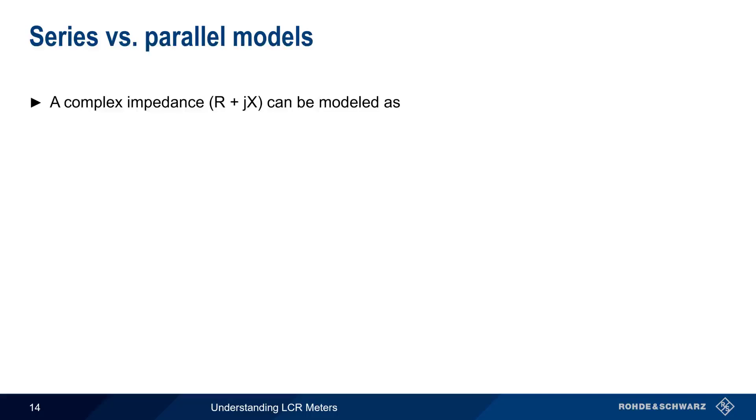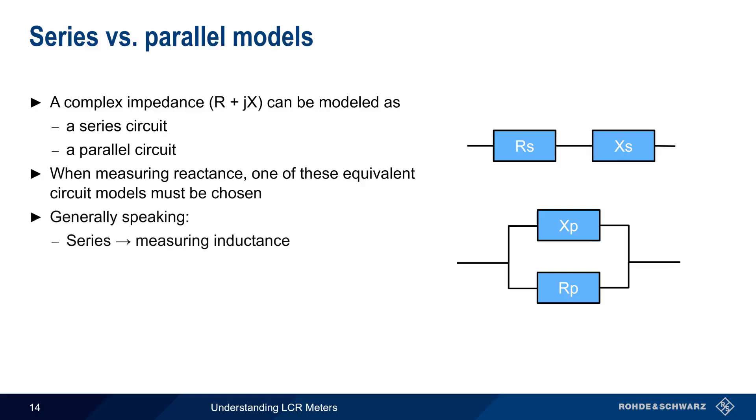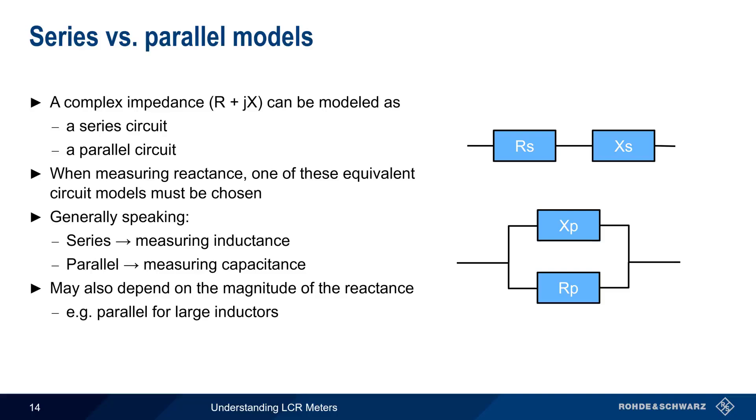Complex impedances consist of a resistance and a reactance, and these can be modeled either as a series circuit or as a parallel circuit. When measuring reactants with an LCR meter, one of these equivalent circuit models must be chosen. Generally speaking, the series model is used when measuring inductance, and the parallel model is used when measuring capacitance. However, the appropriate model may also depend on the magnitude of the reactants. For example, when measuring large inductors, the parallel model is often more appropriate. The reasons and criteria for choosing a model are somewhat involved, but most LCR meters will automatically choose the most appropriate model for a given measurement.